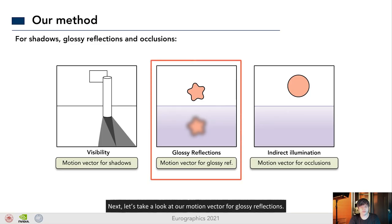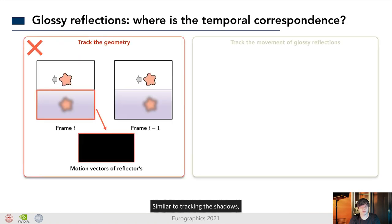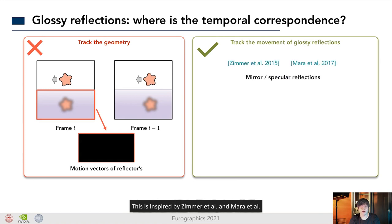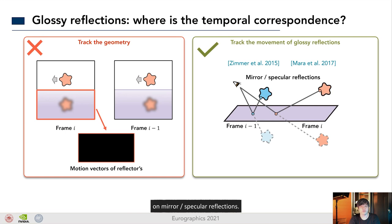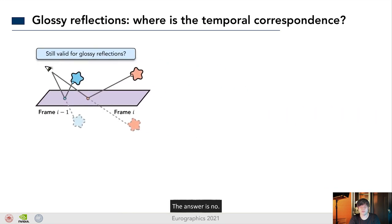Next, let's take a look at our motion vector for glossy reflections. Similar to tracking the shadows, we can also track the movement of glossy reflections instead of the geometry. This is inspired by Zimmer et al. and Mara et al. on mirror and specular reflections. They assume that our virtual image is the real object behind the mirror reflectors, and calculate the motion vectors of the virtual image instead of the reflector. However, the question is, is this still valid for glossy reflection? The answer is no.